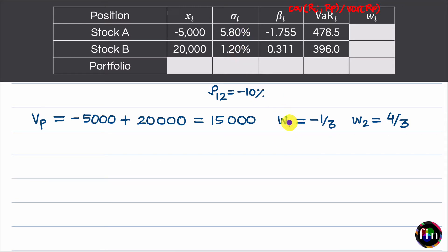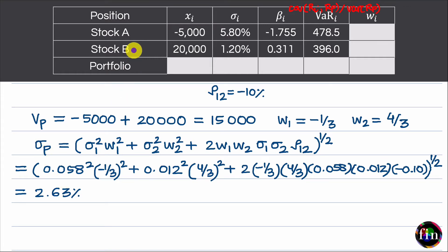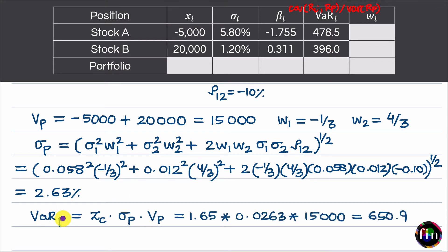We know sigma 1, sigma 2, w1, w2, and rho 1,2. We can use the standard formula for the volatility of a basket of two stocks and substitute these values to find that the sigma for the entire portfolio comes out to 2.63%. Once we know the portfolio sigma, we can find the portfolio VAR: it is Z at 95% confidence (approximately 1.65) times 2.63% times the total exposure of 15,000. The VAR for the entire portfolio comes to 650.9.